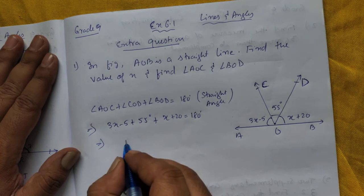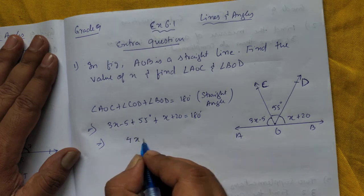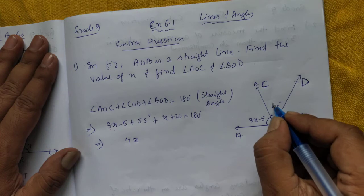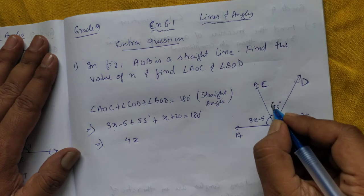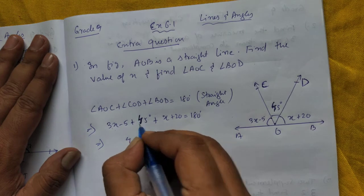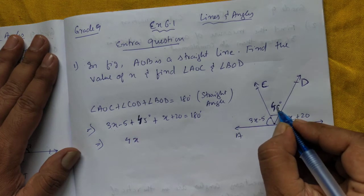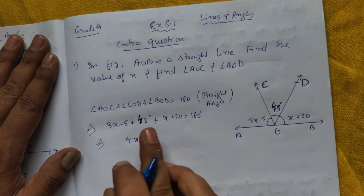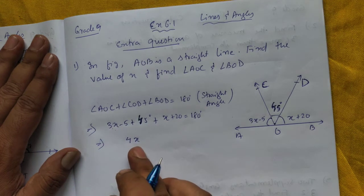So X plus X is 4X. It's 45 degrees, please write 45. Here 3X plus X is 4X, now 45 minus 5 is 40.